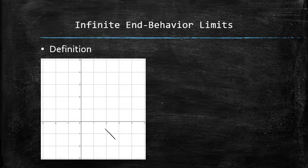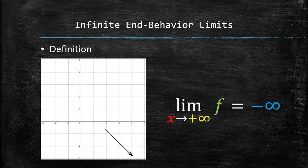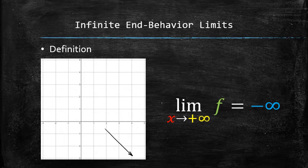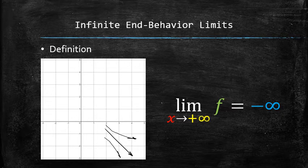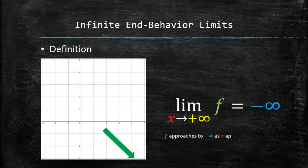We associate the following behavior with the following limit statement called an infinite end-behavior limit. Note that we do not suggest that the graph must approach negative infinity in any particular way — it can approach it faster or slower for different functions. Either of these behaviors are described with the same limit statement, and schematically can be expressed with an arrow pointing in the lower right corner of the graph. We say f approaches negative infinity as x approaches positive infinity.